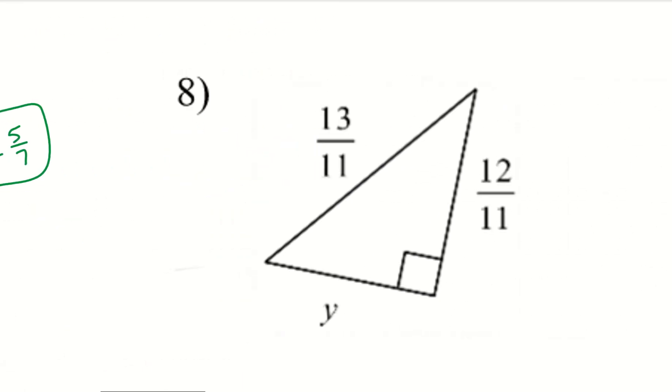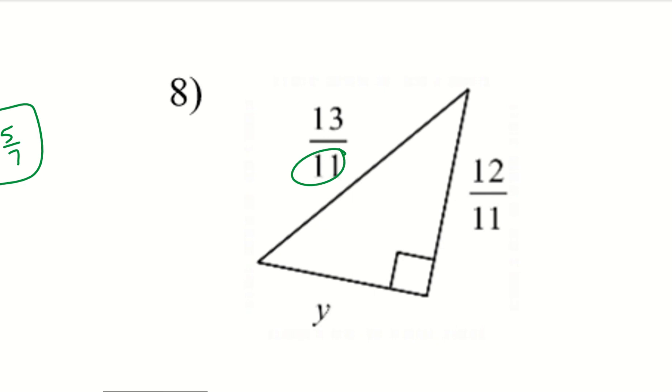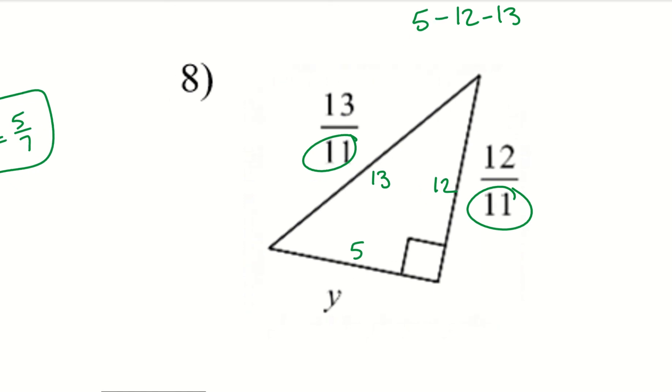Since all we did was divide by 7, that means x equals 5 over 7. So, whenever you have that common denominator between all of the fractions, you can use that and just really pay attention to those numerators. Let's try that again with number 8. So, once again, I notice I have 11s in the denominator. So, if I take a look at my numerators, which is 13 and 12, I know I have a triple that is 5, 12, 13. So, my missing side would be 5. Now, all I need to do is add that denominator. So, y equals 5 over 11.